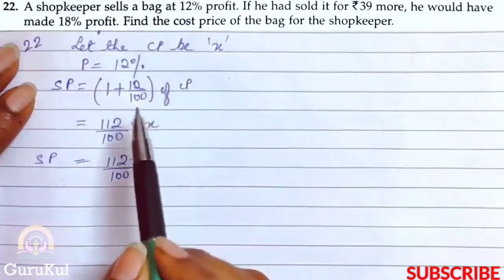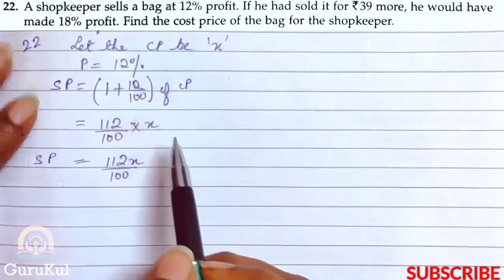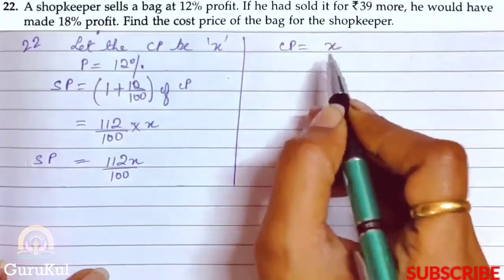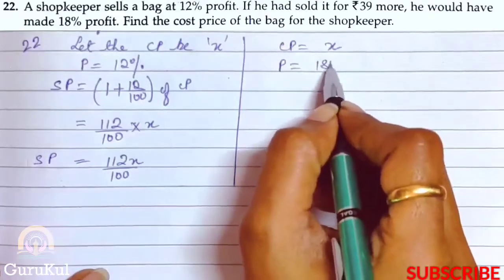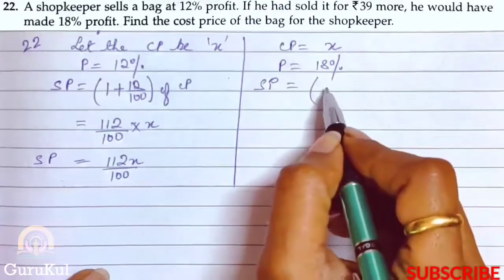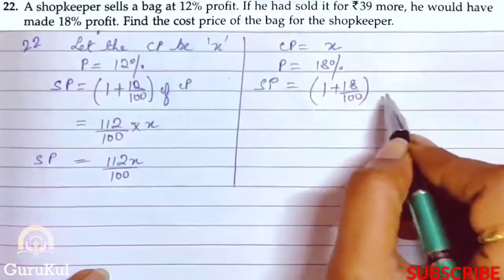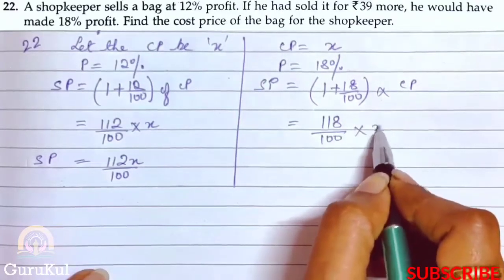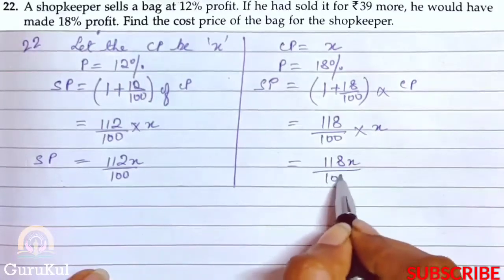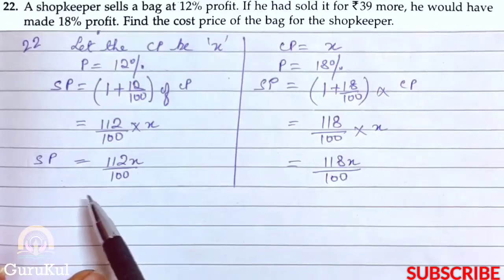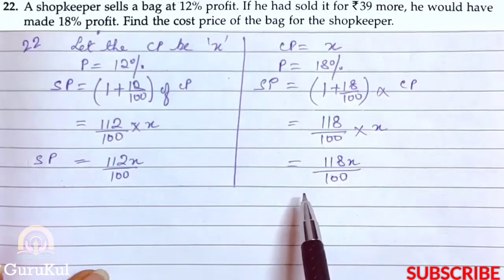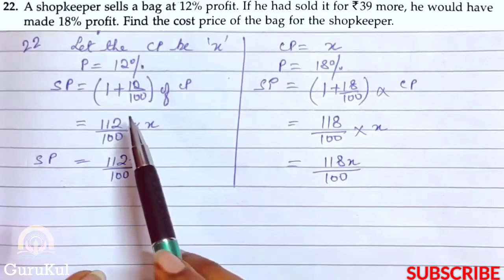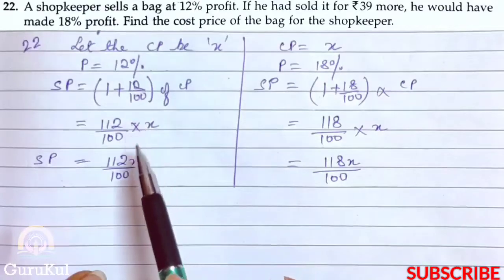This is the first selling price where the shopkeeper made 12% profit. Moving on to the next part, the CP is again the same x. Here the shopkeeper made 18% profit. So SP will be 1 plus 18 by 100 bracket closed of CP. That gives us 118 by 100 into x, equal to 118x by 100.